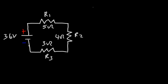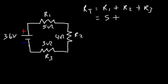Let's begin by calculating the total resistance: R1 plus R2 plus R3, which is 5 plus 4 plus 3. 5 plus 4 is 9, and 9 plus 3 is 12, so the total resistance in this circuit is 12 ohms.